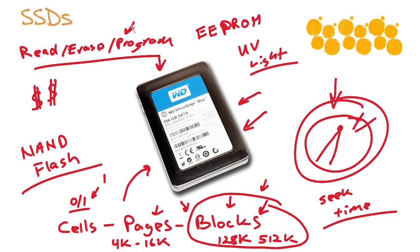Solid-state drive technology does something really clever — it keeps hidden, pre-erased blocks for you. When you go to write to the disk, it will reveal a block that doesn't have to be read, erased, and programmed. This is a very clever process that keeps the solid-state drive technology blazingly fast.